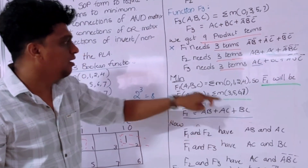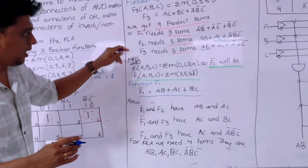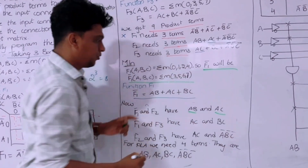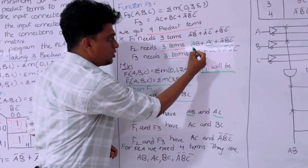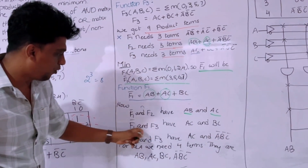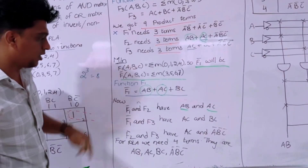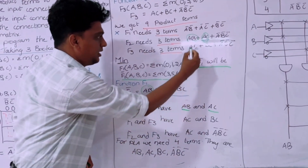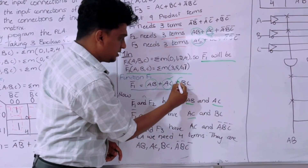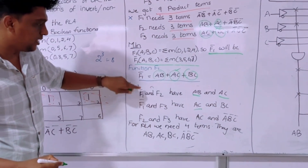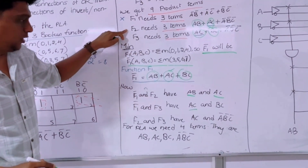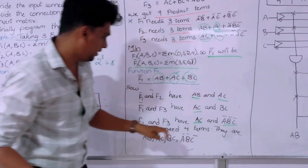Now we compare F1-bar with F2 and F3. When comparing F1-bar with F2, we find common terms AB and AC — one AB appears in each, and AC appears in each. Then comparing F1-bar with F3, the common terms are AC and BC — one BC appears in each. So when comparing F1-bar with F3 we have AC and BC as common terms. For F2 and F3, we already calculated that AC and A-bar B-bar C-bar are the common terms.